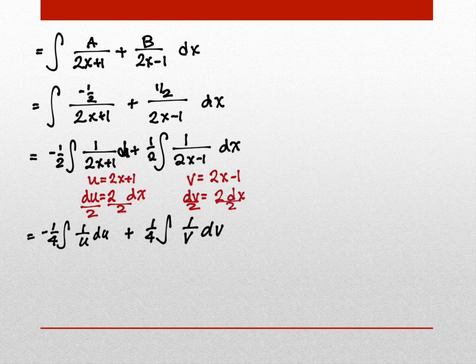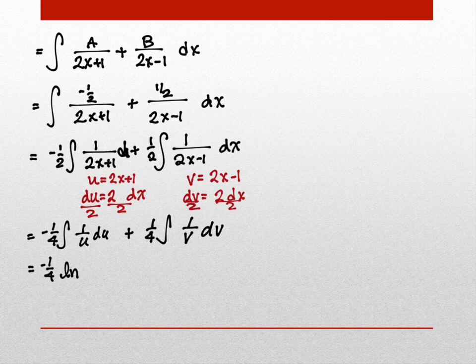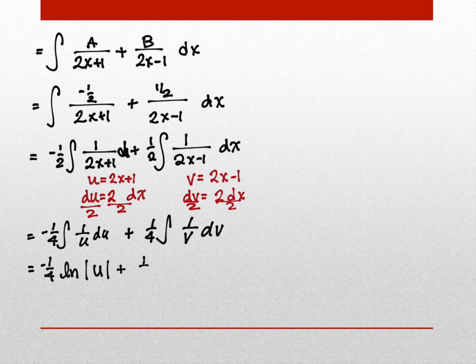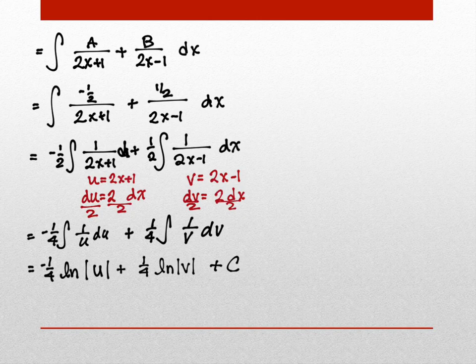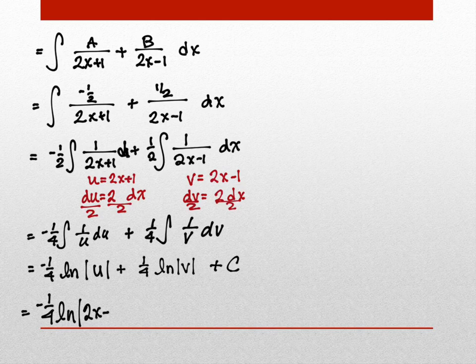This is a natural log — but remember the absolute values. So we get: −1/4 · ln|u| + 1/4 · ln|v|. I'll substitute back: −1/4 · ln|2x + 1| + 1/4 · ln|2x − 1| + C. Technically there's nothing wrong with leaving it that way, but it's easy enough to combine logs, so I would expect you to do so.